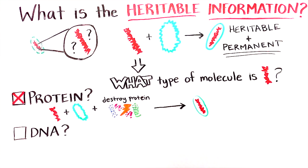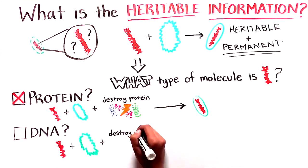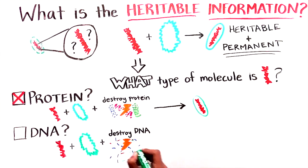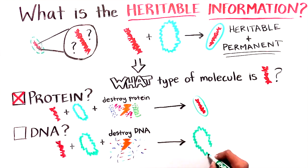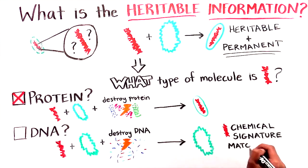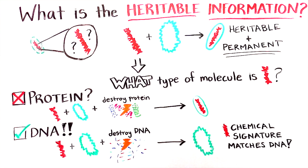So could it be DNA instead? When they added an enzyme that destroys DNA but does not destroy protein, the transforming activity disappeared. Avery and colleagues confirmed that the heritable information had a chemical signature that matched DNA and that their preparation had very little contaminating protein or other molecules. The researchers came to the surprising conclusion that DNA was, in fact, the heritable information.